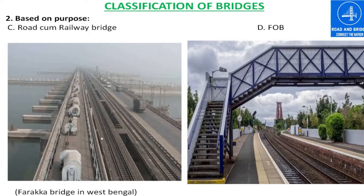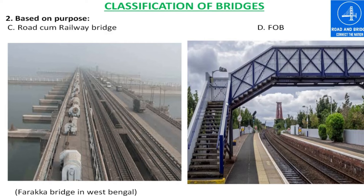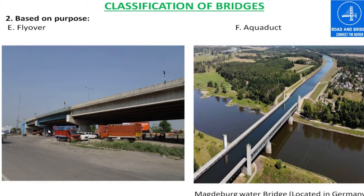Here, this is a Road-cum-Railway Bridge, known as the Farakka Bridge, located in West Bengal. This is a FOB — Foot Over Bridge — which is provided for pedestrians to cross a railway line, highway, or expressway. This is a flyover and this is an aqueduct, which is provided for a canal.